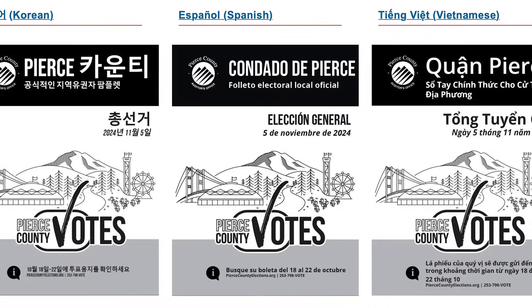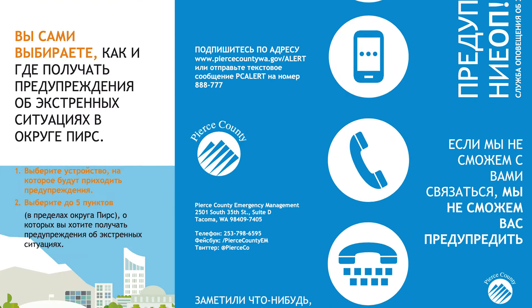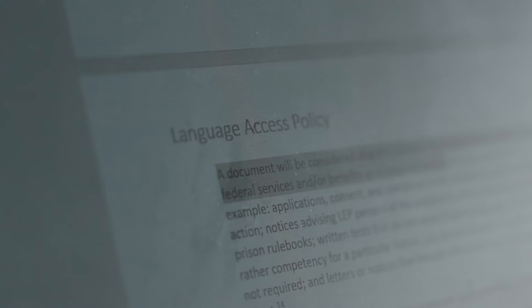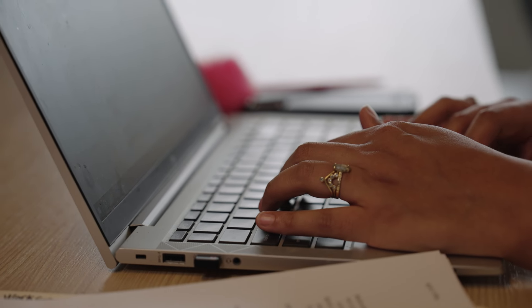Each department in Pierce County has different needs for language access. Today we're highlighting how the Human Services Department is striving for more than just complying with the law, and that starts with the Language Access Plan. The language access plan is intended to share with people how your department intends to provide language access — it's really just a general blueprint of the steps you're taking to provide language access to the community.